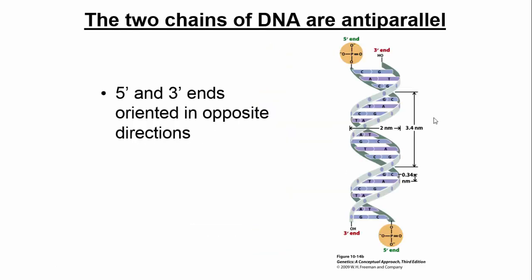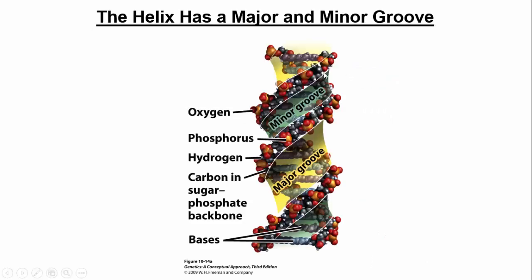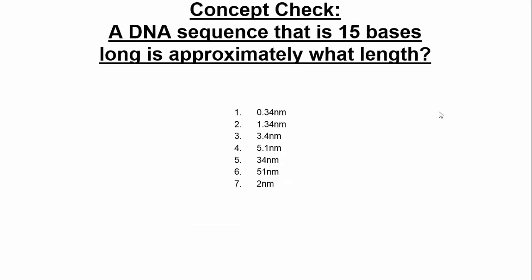Another image showing the dimensions of DNA: if you look at DNA from the side, it has a major groove and a minor groove. The major groove is a wider gap as the phosphate backbone turns around; the minor groove is a smaller gap. These will be significant in future lectures when we talk about protein binding. For a concept check: if a DNA sequence is 15 bases long, what is the approximate length? You need to set up a proportion — one turn or 10 base pairs equals 3.4 nanometers. A 15-base sequence is 1.5 turns, so 3.4 times 1.5 equals 5.1 nanometers.